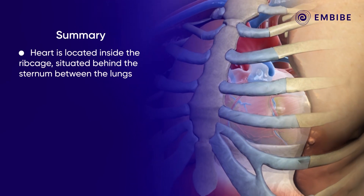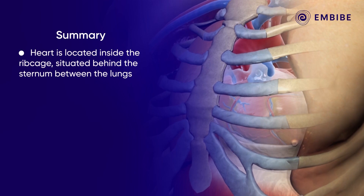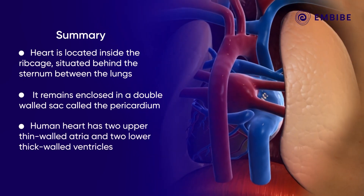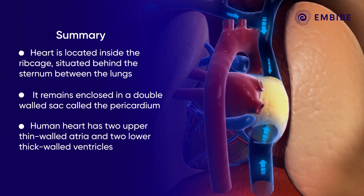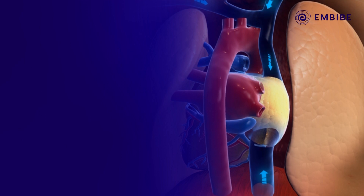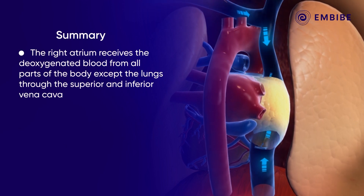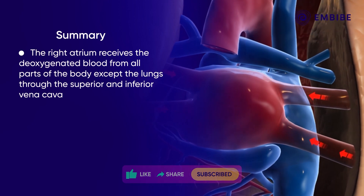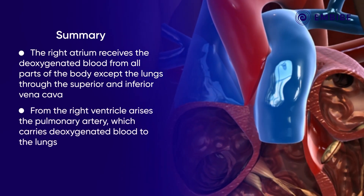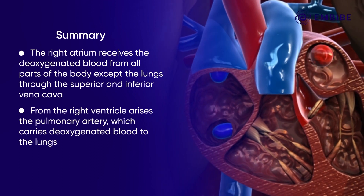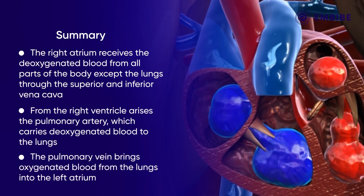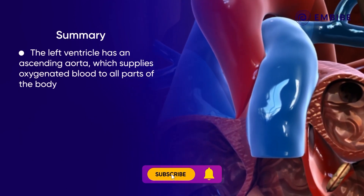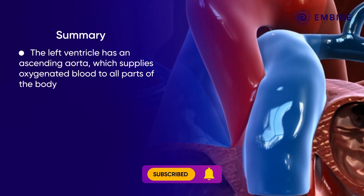Let's summarize: the heart is located inside the rib cage, situated behind the sternum between the lungs, enclosed in a double-walled sac called the pericardium. The human heart has two upper thin-walled atria and two lower thick-walled ventricles. The right atrium receives deoxygenated blood from all parts of the body through the superior and inferior vena cava. The pulmonary artery carries deoxygenated blood to the lungs, while the pulmonary vein brings oxygenated blood from the lungs to the left atrium. The left ventricle has an ascending aorta which supplies oxygenated blood to all parts of the body.